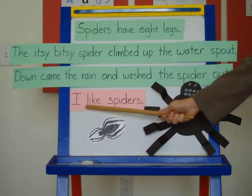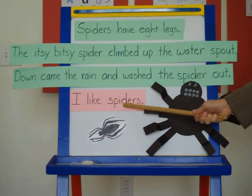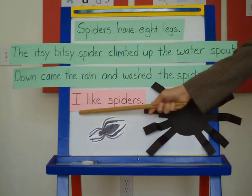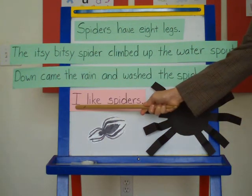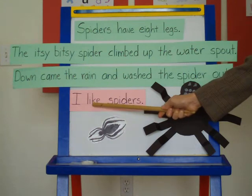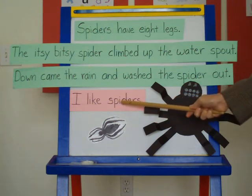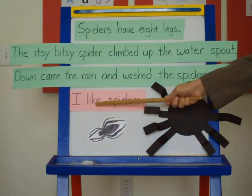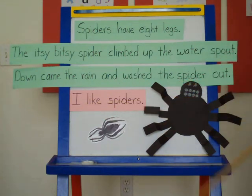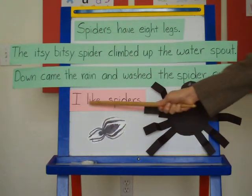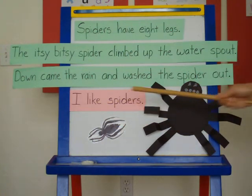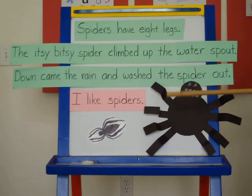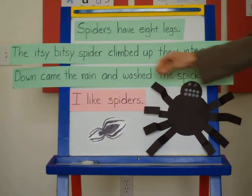I like spiders — I see I, like, and spiders. So those are words that are put together to make a sentence, a complete thought: I like spiders. So we're going to move this to the sentence category.